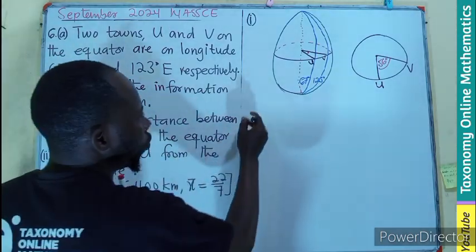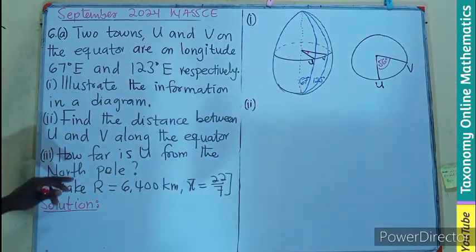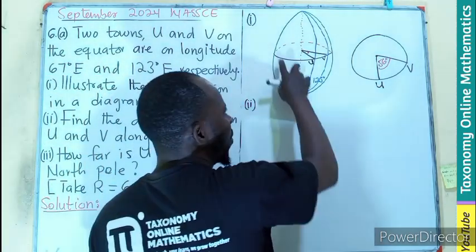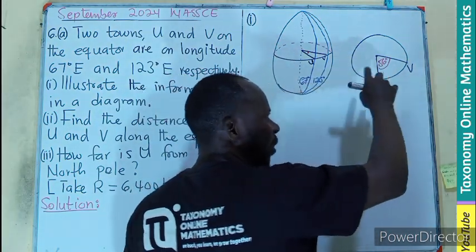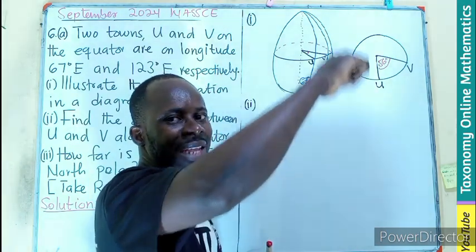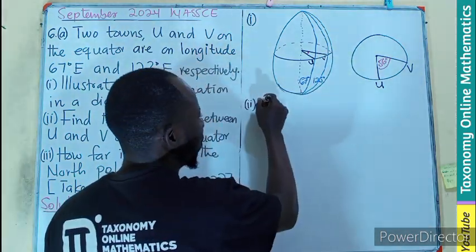Let's go to part two, which is asking for the distance between UV along the equator. This is the equator, so along this place, this is just going to be the length of an arc. You see that? That's the length of an arc. How do you find the length of an arc?